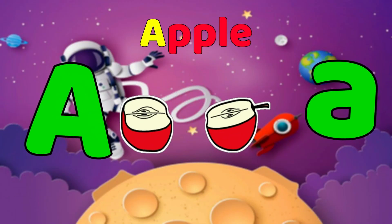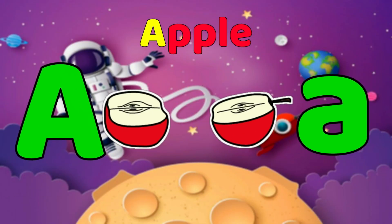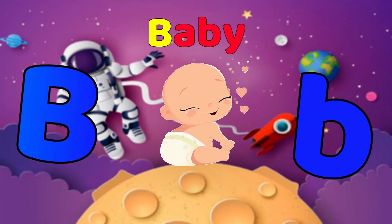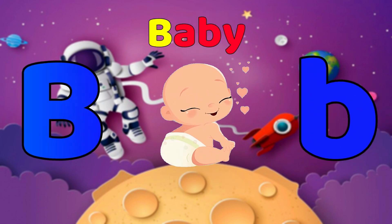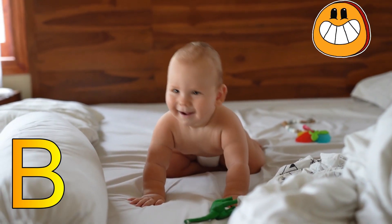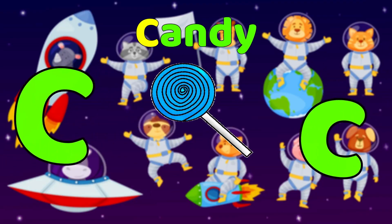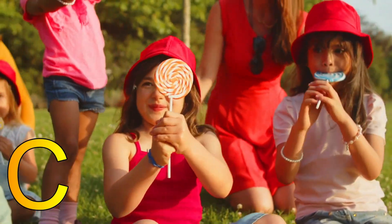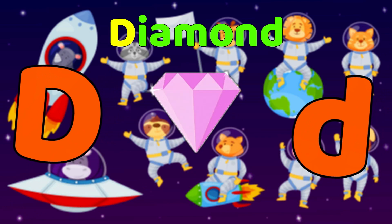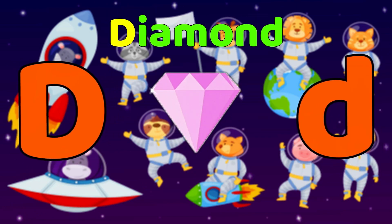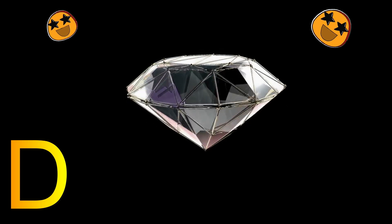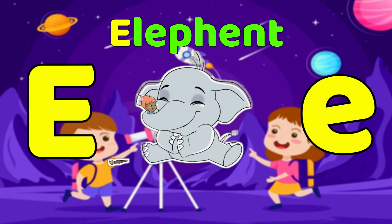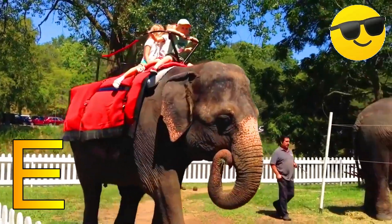A is for Apple, A-A-Apple, A-Apple. B is for Baby, B-B-Baby, B-Baby. C is for Candy, C-C-Candy, C-Candy. D is for Diamond, D-D-Diamond, D-Diamond. E is for Elephant, E-E-Elephant, E-Elephant.